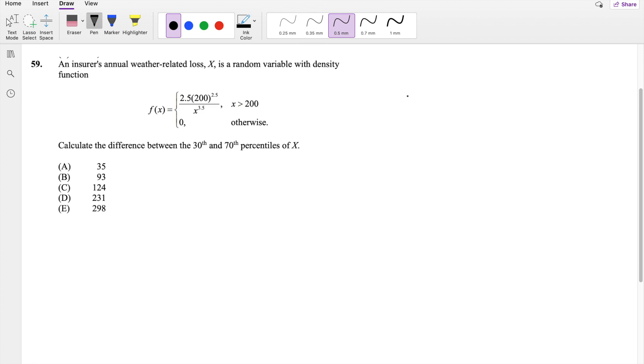So we're asked to find the 30th and 70th percentile of X. And we know that X has to be greater than 200, so it's going from 200 to some value. Let's say I'm going to start with the 30th, X_30, integrating this out. And they say that this has to be equal to the 30th percentile, which we know is 0.3.